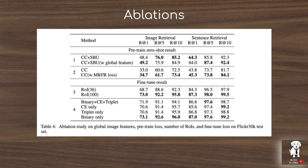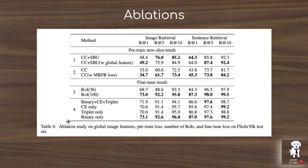Further ablations examine adding global image features, the effect of the masked region feature regression loss during pre-training, and the number of regions of interest used as input — showing a massive performance decrease when fewer Faster RCNN regions are used in the visual sequence. They also compare different losses for the image-text matching task, such as cross-entropy versus triplet loss.